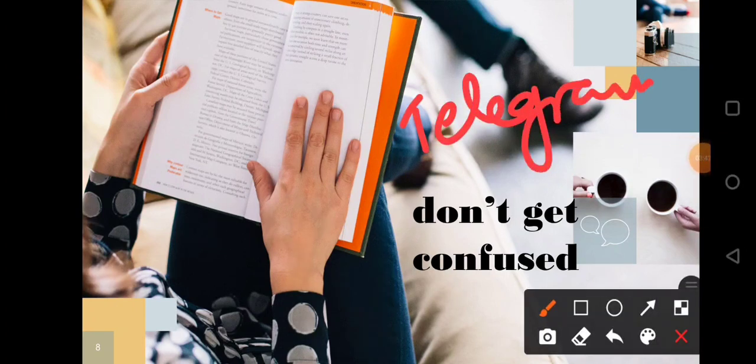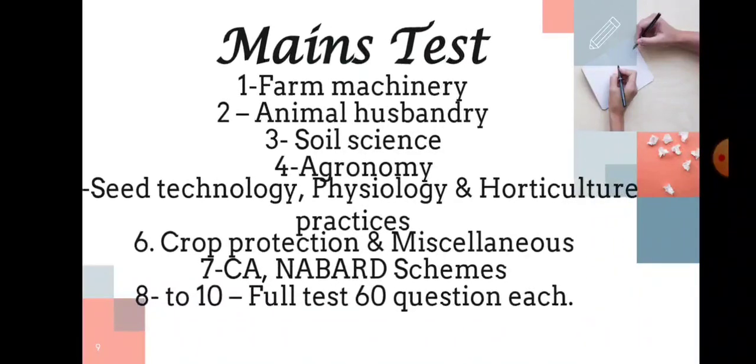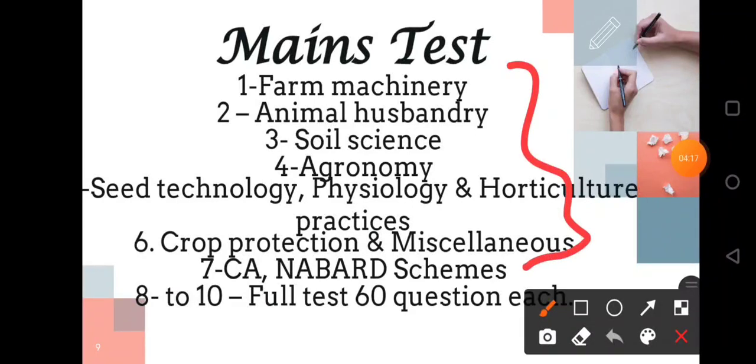Regarding mains examination, totally you have 10 tests. Test number one: farm machinery, 100 questions. Test number two: animal husbandry. Test number three: soil science. Test number four: agronomy. Test number five: seed technology, physiology and horticultural practices. Test number six: crop protection and miscellaneous topics. Test number seven: current events and NABARD-related schemes.